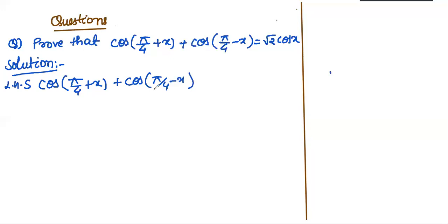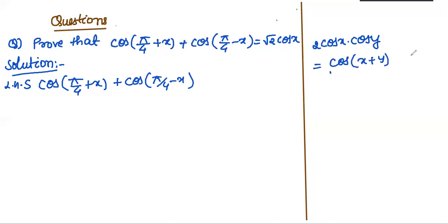We need to read the question carefully and then apply the appropriate identity. The identity we can use here is: 2 cos x · cos y = cos(x + y) + cos(x − y). In this expression, x equals π/4 and y equals x, so we can directly apply the identity.